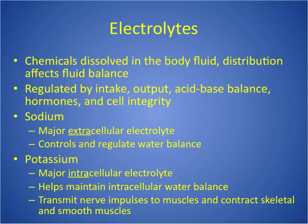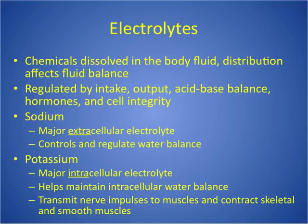The normal range of electrolytes is very narrow, so even small changes can cause big problems. We get most electrolytes from food, and the kidneys control them by excreting or reabsorbing them. The two major electrolytes are sodium — the major extracellular electrolyte that controls water balance — and potassium — the major intracellular electrolyte that maintains intracellular water balance and transmits nerve and cardiac impulses.